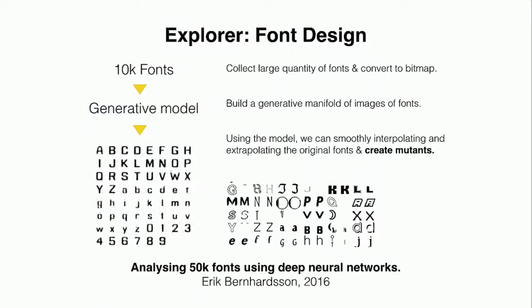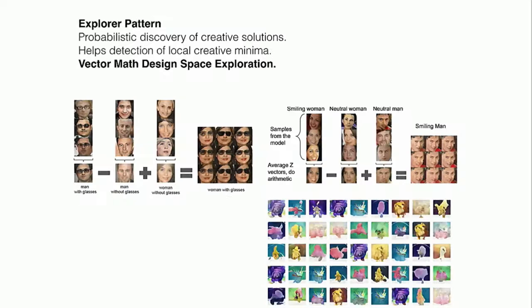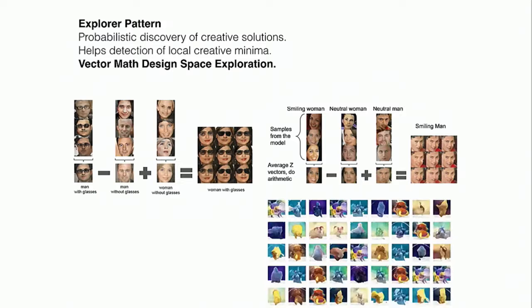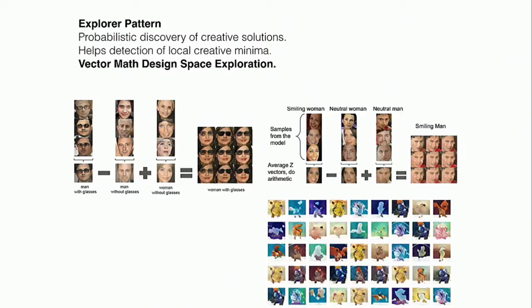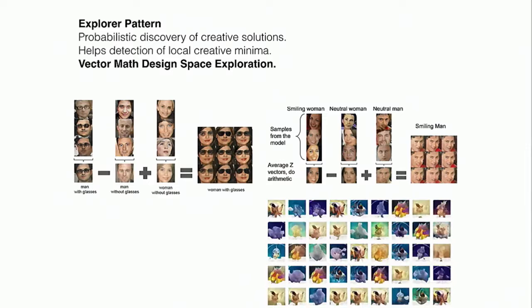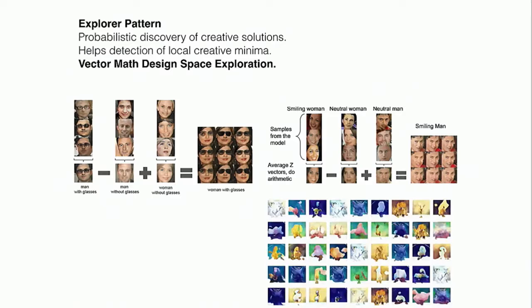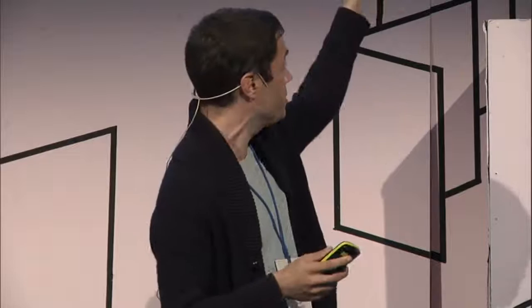A neat thing about the Explorer Pattern is that you can always map it out as a two-dimensional map — here 10,000 fonts all nicely mapped out in groups. Two-dimensional maps is just one way of exploring the generative model. Another way uses simple vector math. Jumping to faces: this model was trained on millions of celebrity faces, and you can do interesting things with vector math — a man with glasses minus a man without glasses plus a woman without glasses gets you a woman with glasses. You can do this with any image type, even generating new Pokémons.